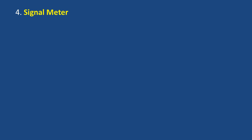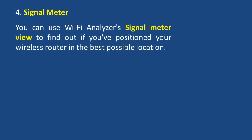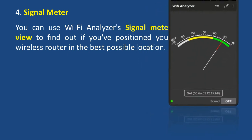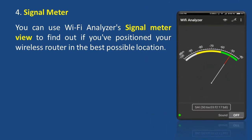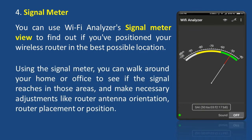Signal meter. You can use Wi-Fi Analyzer's signal meter view to find out if you have positioned your wireless router in the best possible location. Using the signal meter you can walk around your home or office to see if the signal reaches those areas and make necessary adjustments like router antenna orientation, router placement, or position.